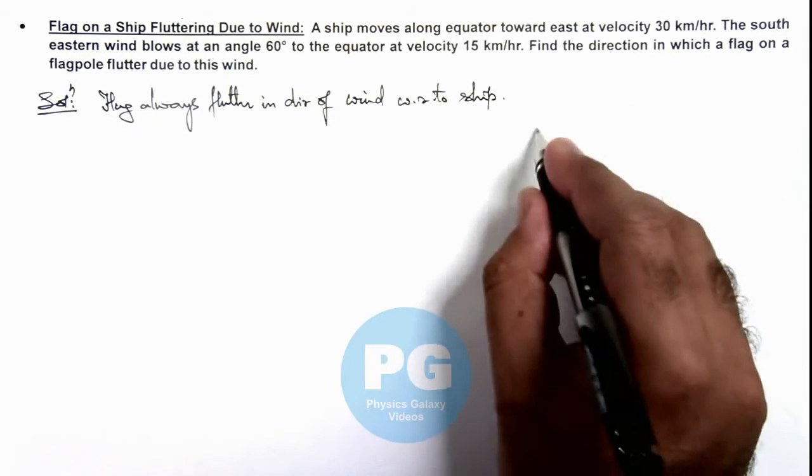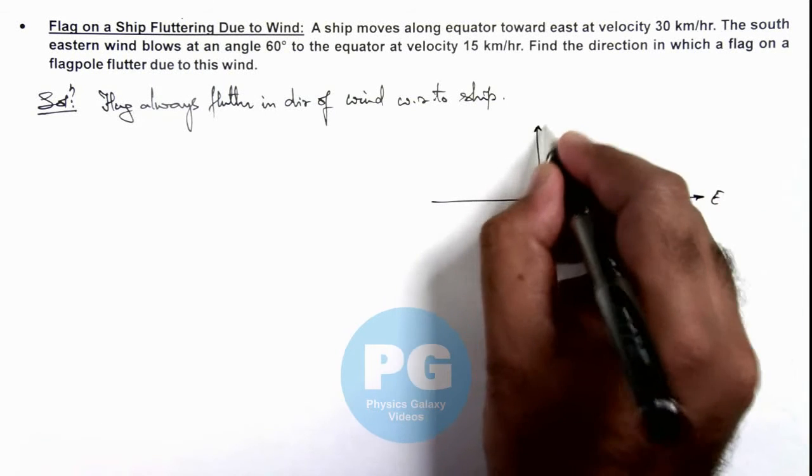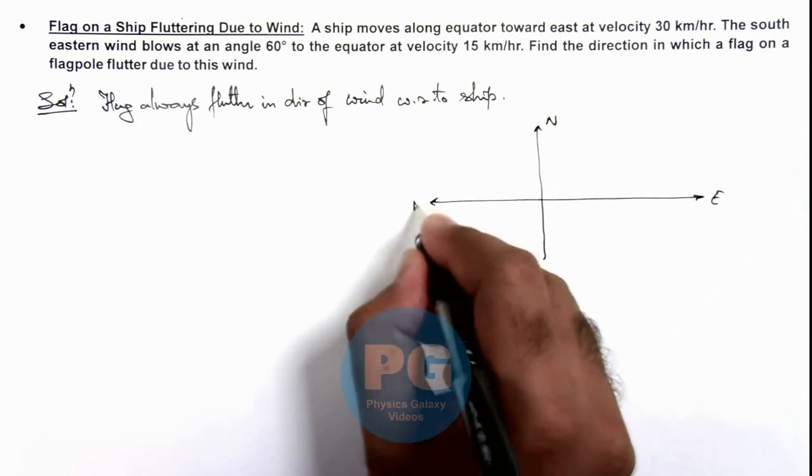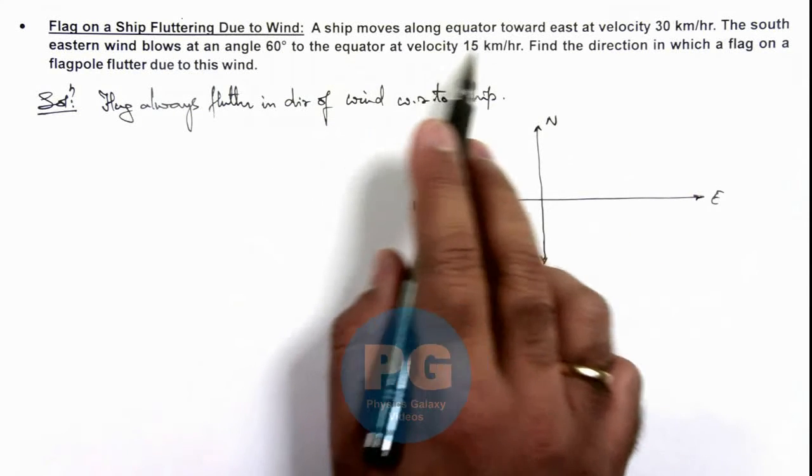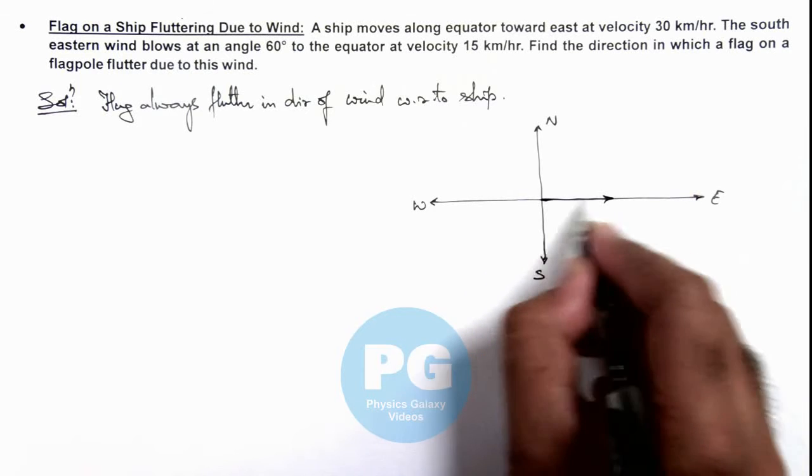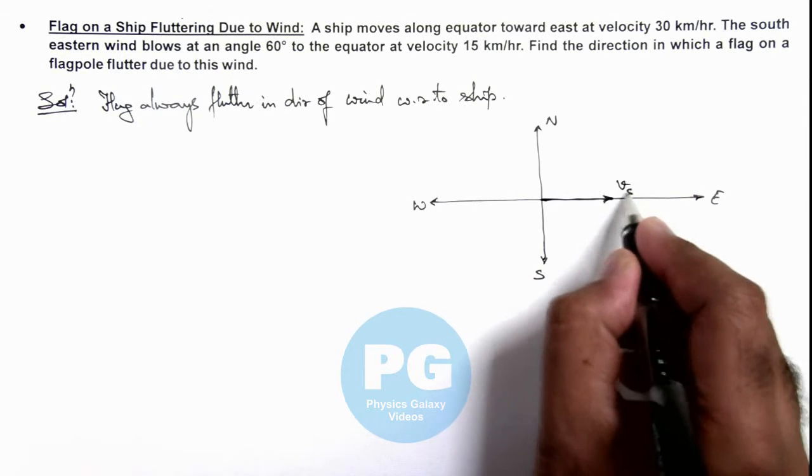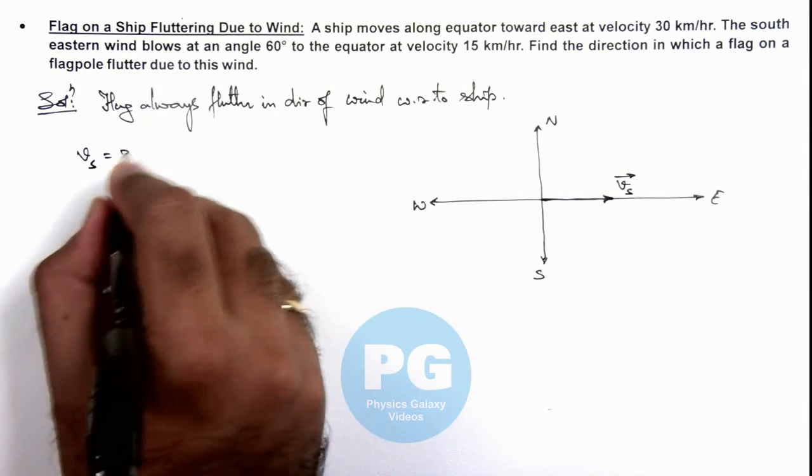Let's have a look at the direction of velocity. If this is east, north, west, and south, we are given that the ship is moving toward east with velocity Vs, the vector velocity of ship, which we can write as 30 km/h.